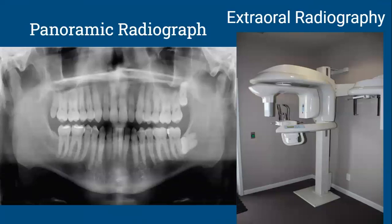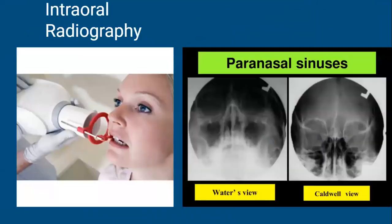The first x-ray it talks about is the Wolters view, and then later the Caldwell's view. Find those terms and highlight them first so you can follow along. Here's the Wolters view — this one requires the patient to have a hyperextended neck, but it allows us to really see some details. Specifically on page 699: the infraorbital rims, frontal and maxillary sinuses, the alveolar arch, and the zygomas are really well observed with the Wolters view.